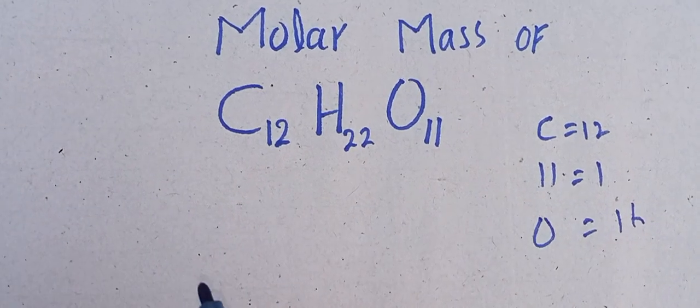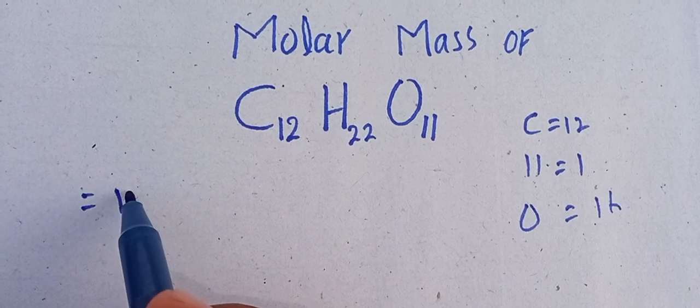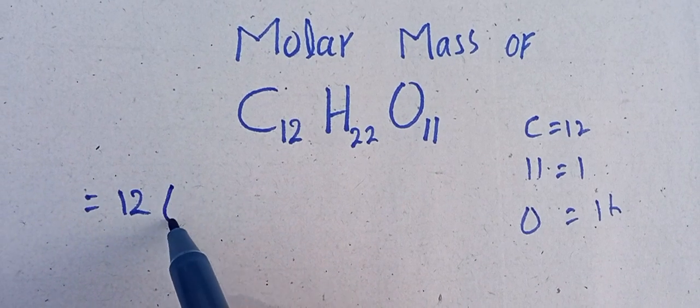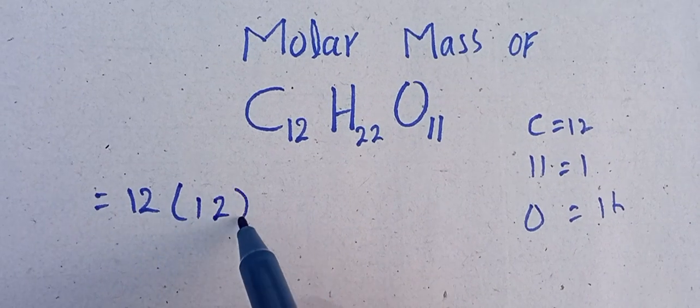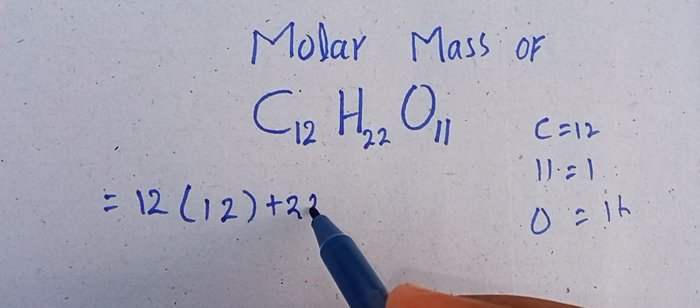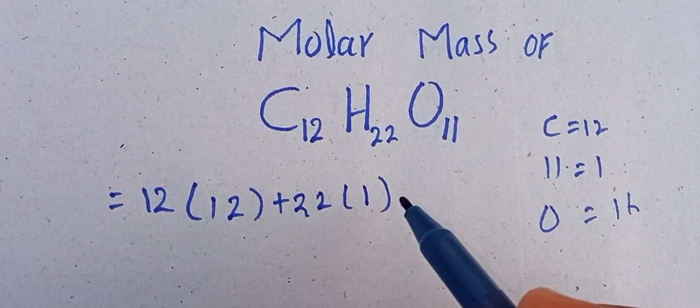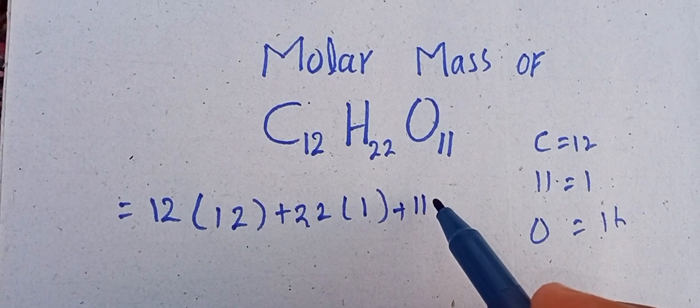Dear students, we have 12 atoms of carbon with atomic mass 12, 22 atoms of hydrogen with atomic mass 1, and 11 atoms of oxygen.